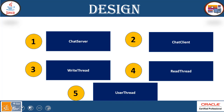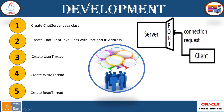There will be five Java classes which will help cover the requirements. The ChatServer class will maintain the server part. ChatClient will maintain the client part. We have WriteThread, ReadThread, and UserThread. The development flow is: create the ChatServer Java class, create the ChatClient Java class with the port and IP address to bind it, and create UserThread. We maintain multi-threading to create WriteThread and ReadThread, handling input and output streams.